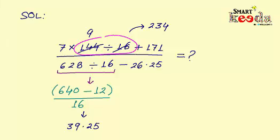Now we have got another value in denominator part which is minus 26.25. And we can easily cancel out the decimal part which is 0.25 in both the numbers and 39 - 26 will give us 13. So the complete denominator part after simplifying will give us 13.